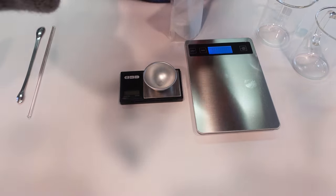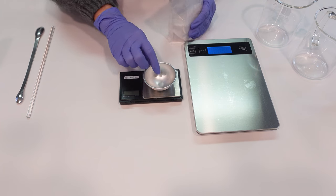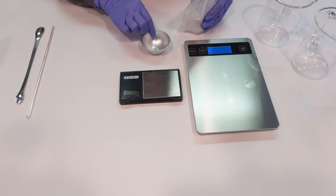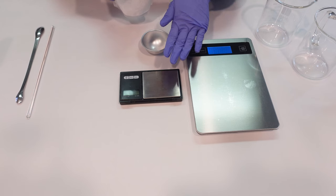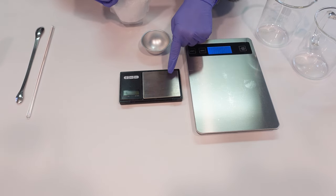First things first, this formula is comprised of a heated water phase, a heated oil phase, and a cool down phase. It's basically an emulsified type cream, so we're combining oils and waters. The first thing we're going to do is weigh off the ingredients needed for the water phase.